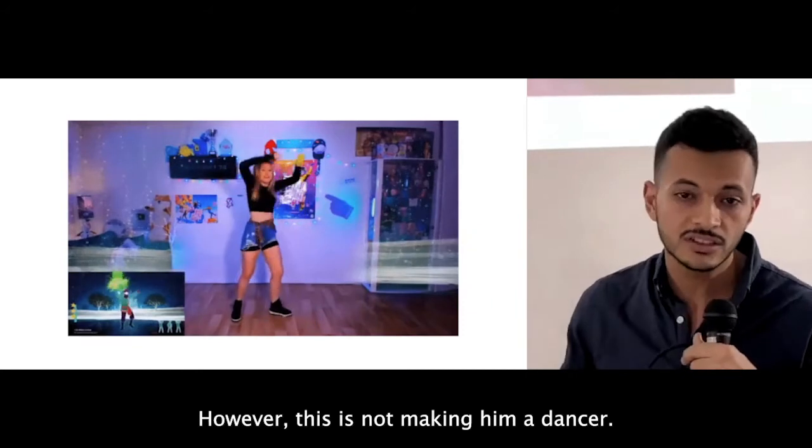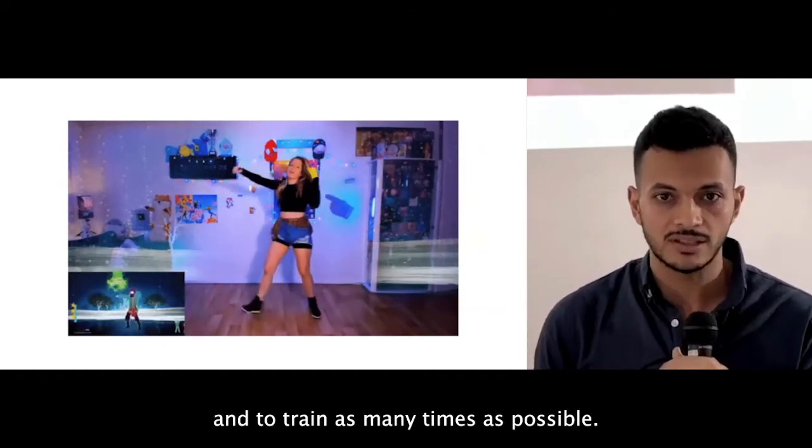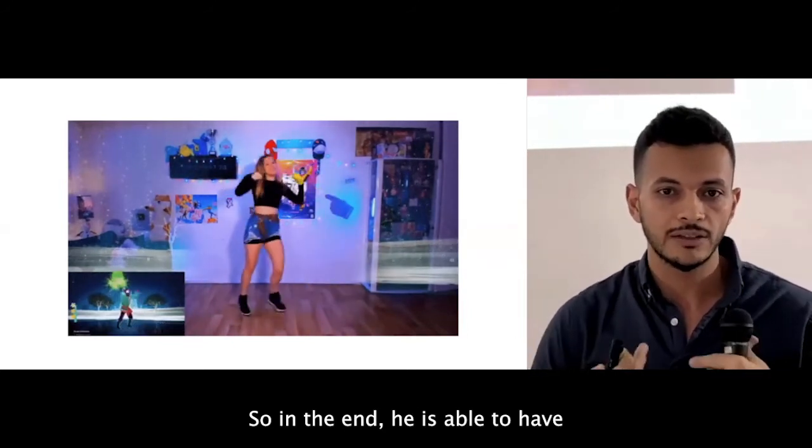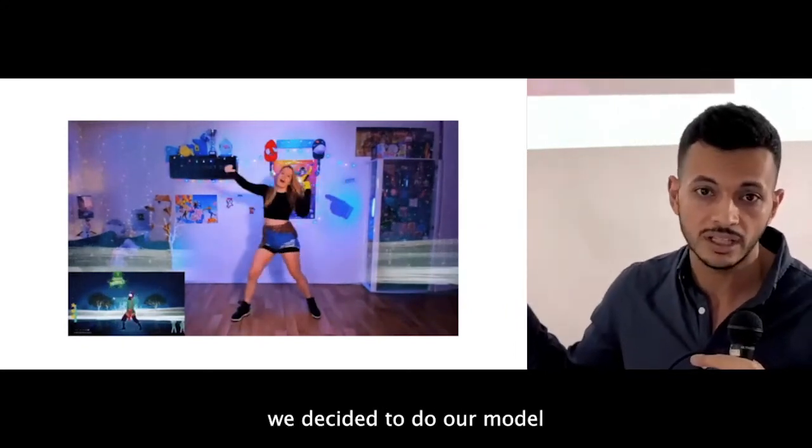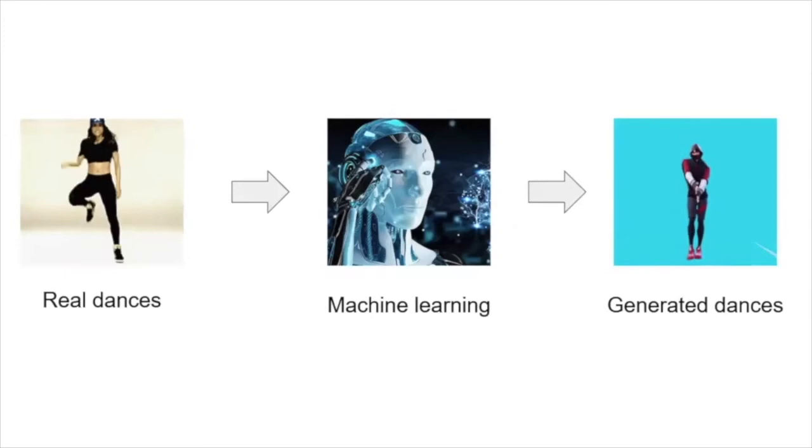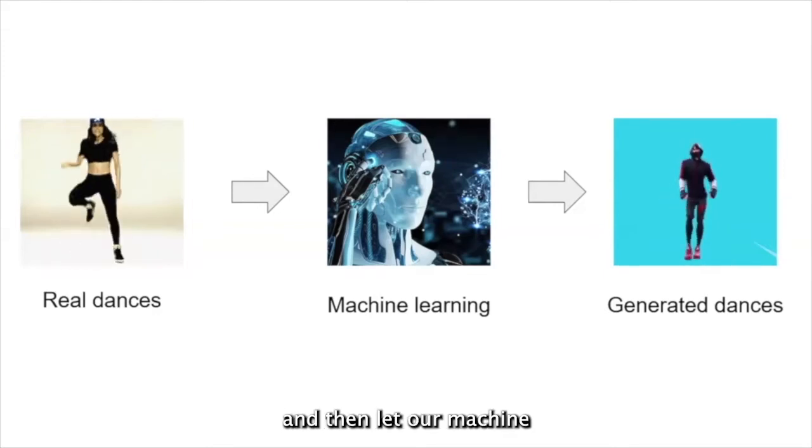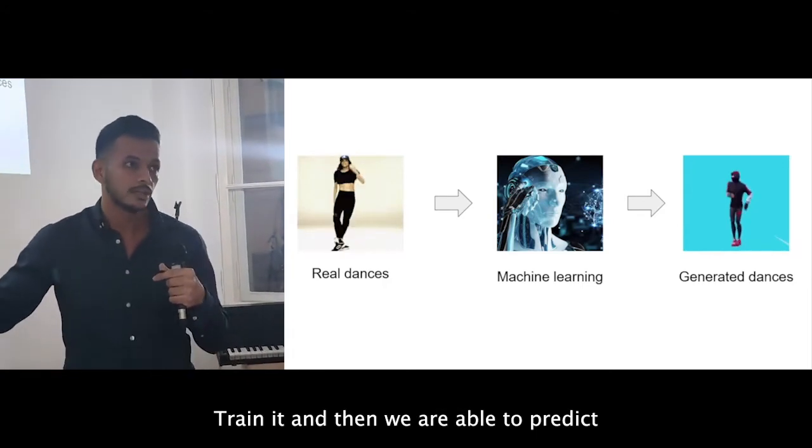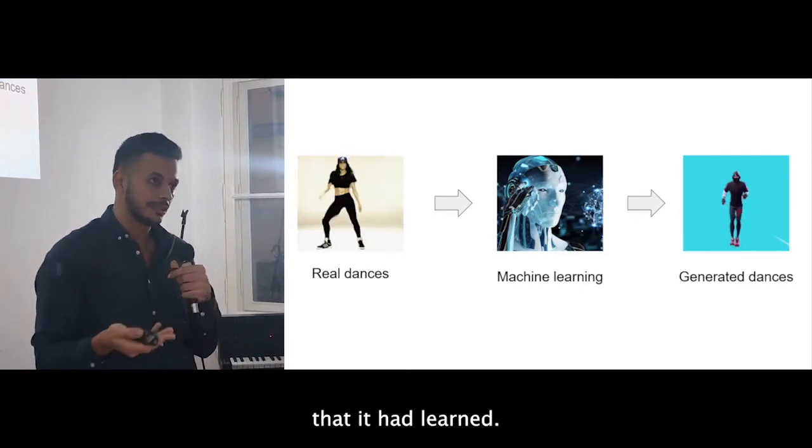However, this is not making him a dancer. What he needs actually is to watch many videos and to train as many times as possible. So in the end, he is able to have a general sense of the movement of this dance. And from there, we decided to do our model in the same way. How can a machine learn dancing? Our approach is compiling as many videos of a certain dance as possible, and then let our machine learn these videos, train it, and then we are able to predict or generate new movements that's based on the style that it had learned.